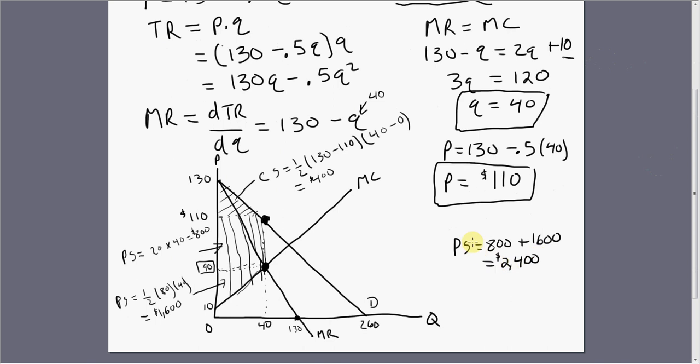And then last is the deadweight loss. The deadweight loss is this triangle right here. It's all these units in which consumers have a higher willingness to pay than it costs the monopolist to produce. So this triangle region right here is the deadweight loss.